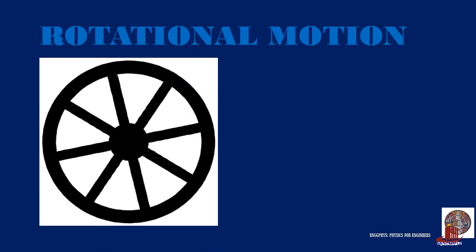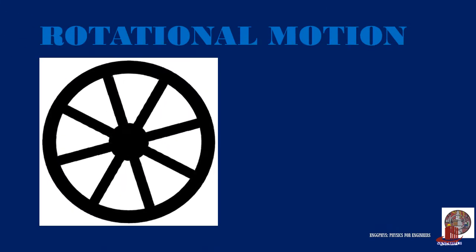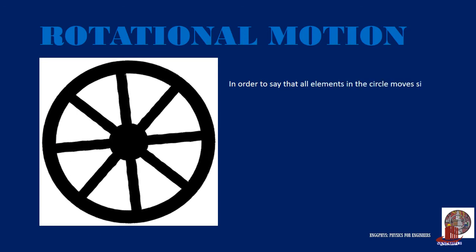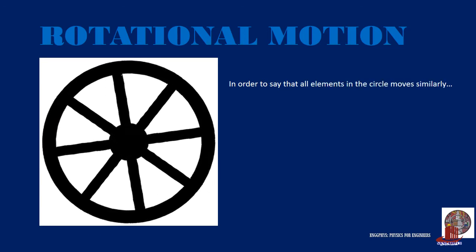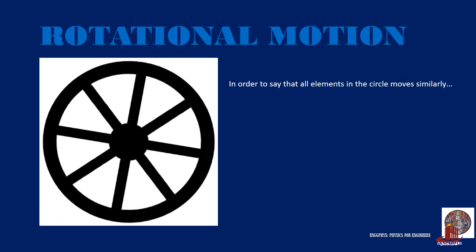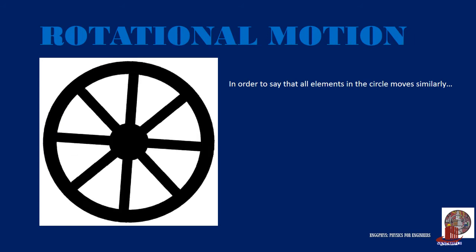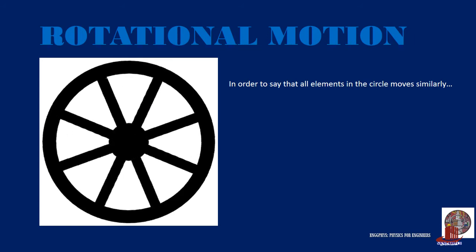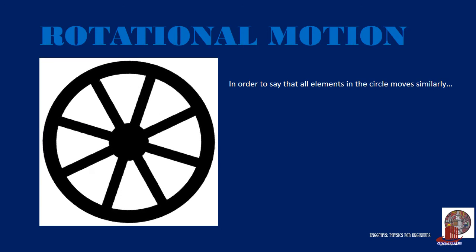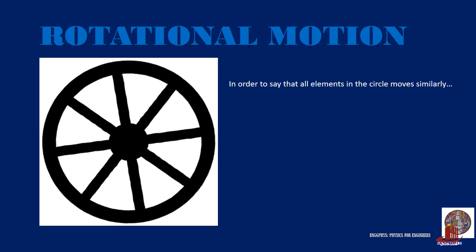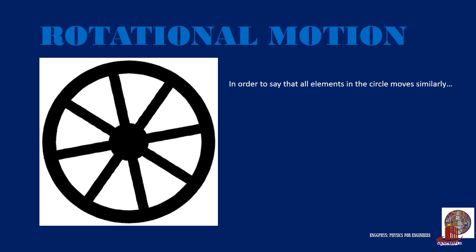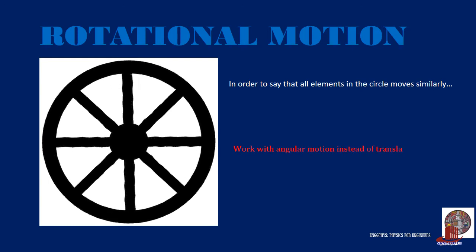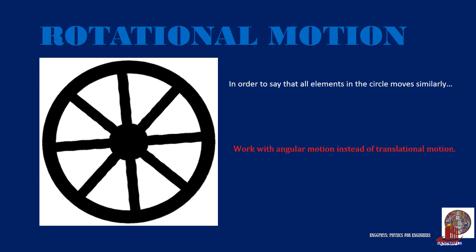In the discussion we just had earlier, it was shown that the distance traversed by a point on the edge of the orbit will be much more than that traveled by a particle closer to the center. So how do we work on the principle that in a single rotating system, all elements are treated as one system? Computations will be in angular motion instead of translational motion.